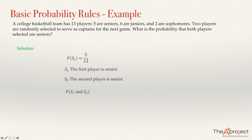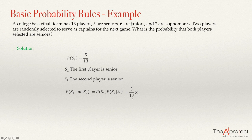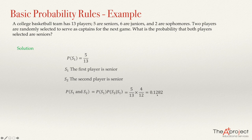This equals the probability that the first player is senior times the probability that the second player is senior given the first was senior. The probability that the first player is senior is 5 over 13. If the first player was senior, we now have only 4 senior players out of 12 total players, so that conditional probability is 4 over 12. Making this product, the answer is 0.1282. Every question involving sampling without replacement is solved in this way.